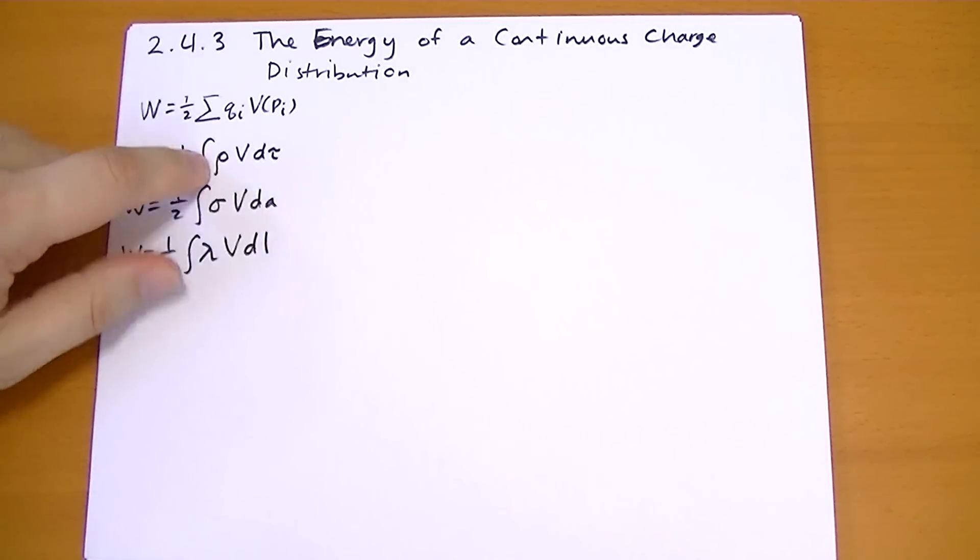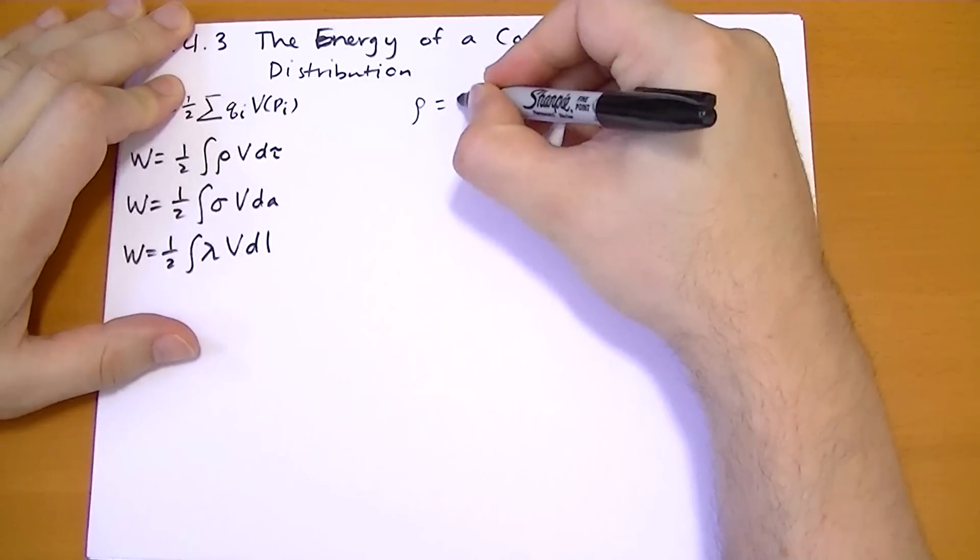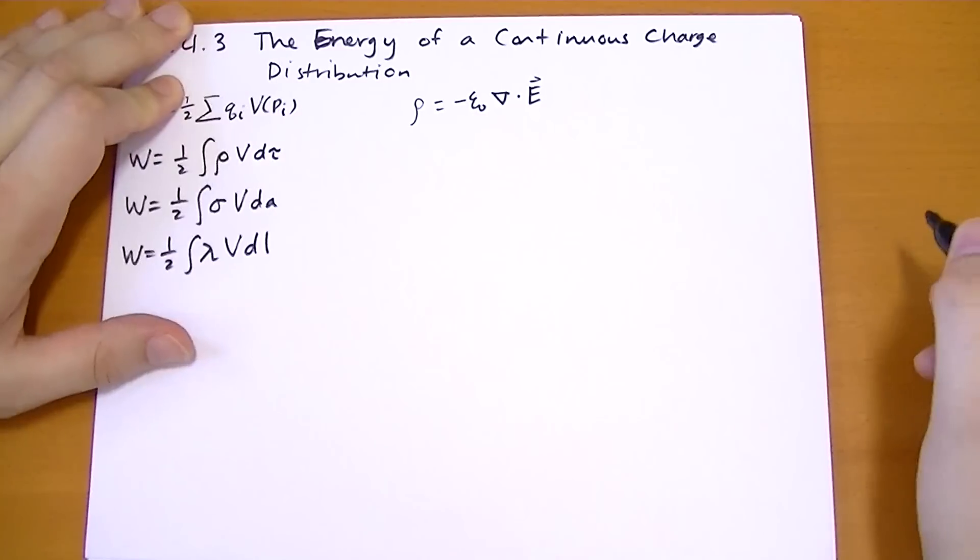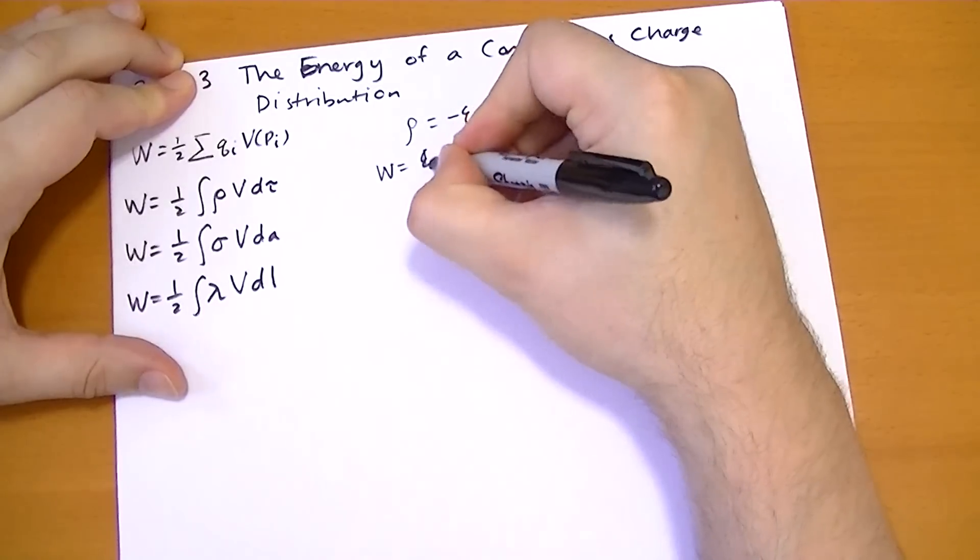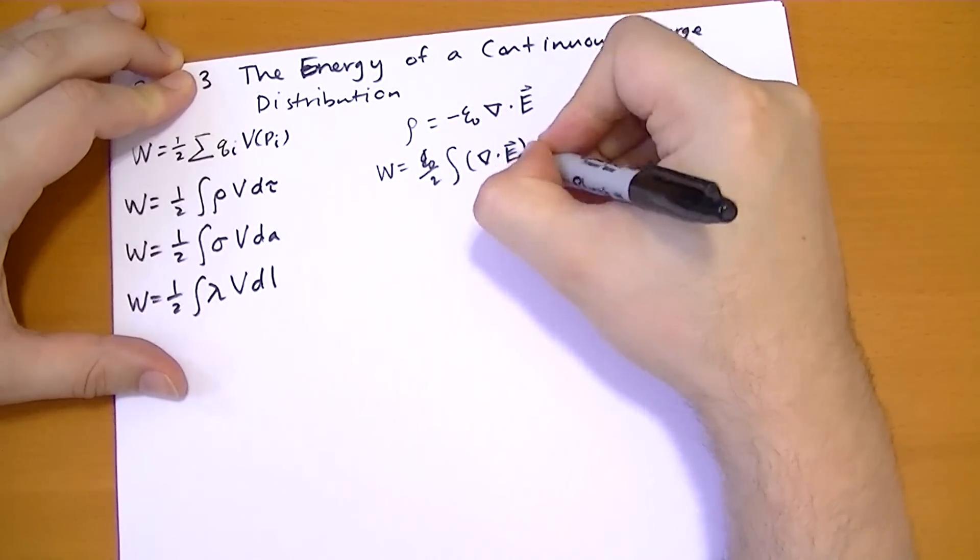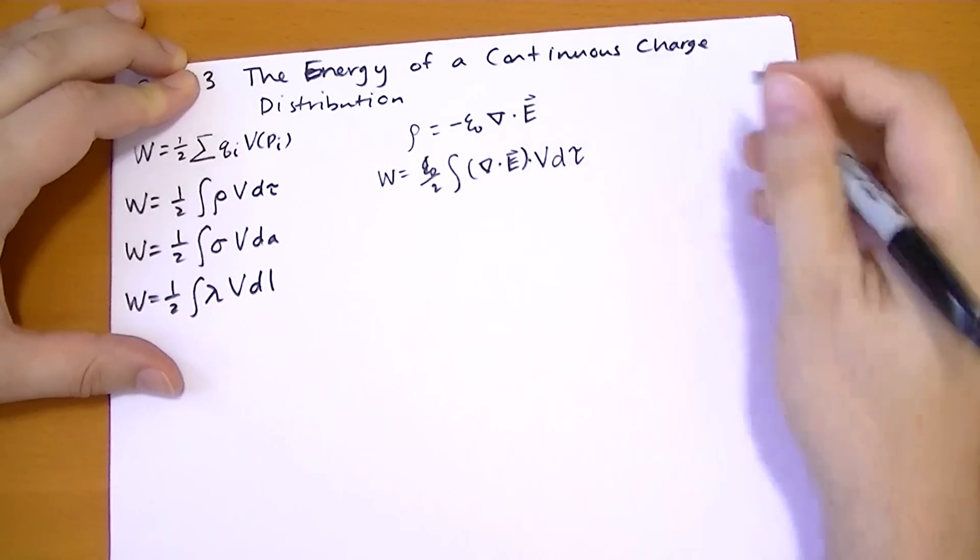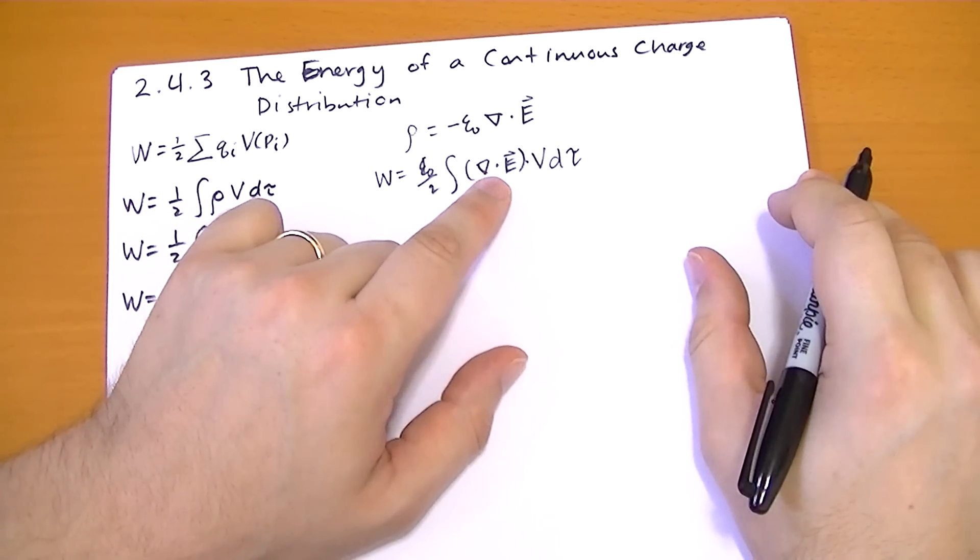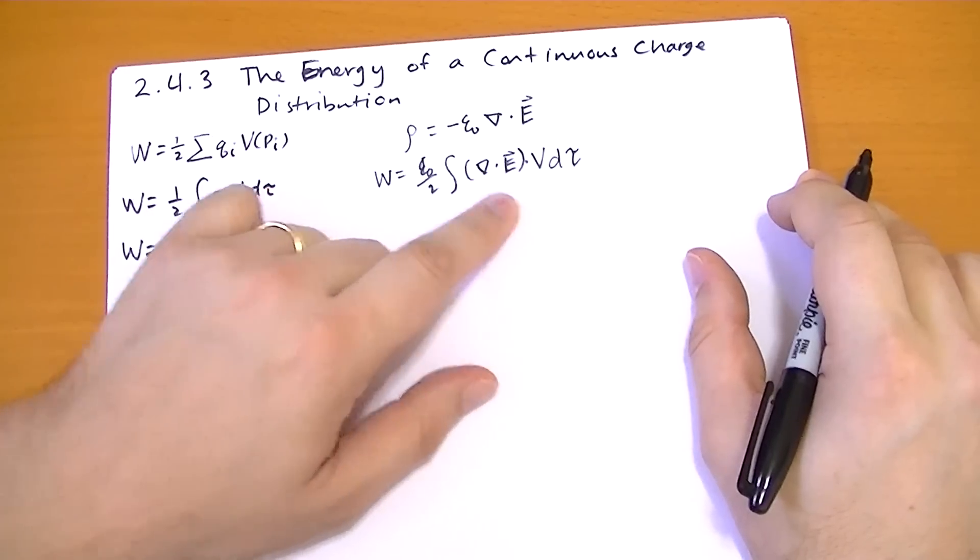Now we're going to take this one and recall that rho is equal to minus epsilon naught, the divergence of the electric field. Okay, so this one becomes, the work becomes epsilon naught over 2 integral of divergence of E times v, not dot product, just times v. These are just two scalars multiplied by each other.